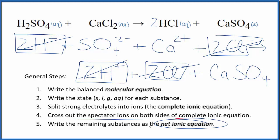What's left is the net ionic equation for H2SO4 plus CaCl2. I'll clean it up, write the states. We'll have our net ionic equation.